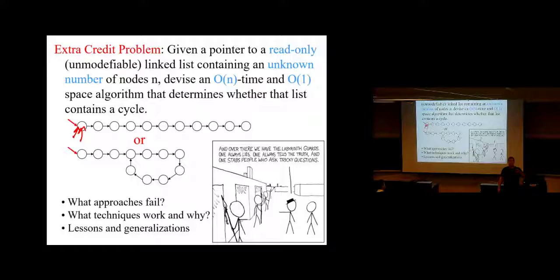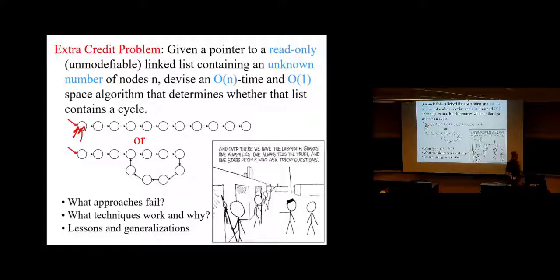How many understand that infinity is not an integer? It's not a natural number. How many can prove that infinity is not an integer? If you give me a number that's infinity, then assume N was infinite. N plus 1 is also infinite — but that equals the first N, which is infinite. So I subtract N from both sides and get 1 equals 0. That's a contradiction. So infinity is not an integer.